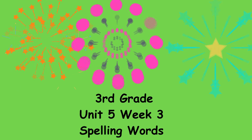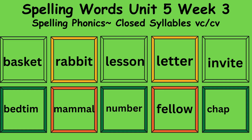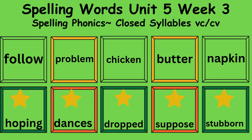Wonders 3rd grade, Unit 5, Week 3 Spelling Words. This week we will be using spelling phonics: closed syllables, vowel-consonant-consonant-vowel. The words we will be learning are: basket, rabbit, lesson, letter, invite, bedtime, mammal, number, fellow, chapter, follow, problem, chicken, butter, napkin, hoping, dances, dropped, suppose, stubborn.